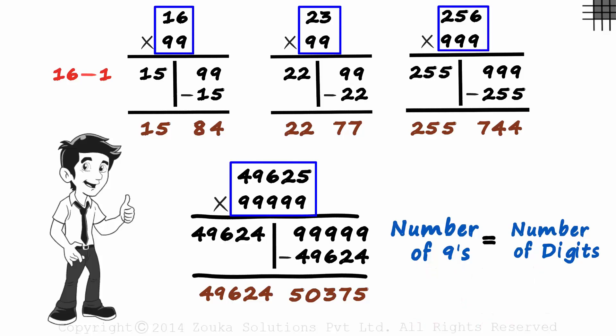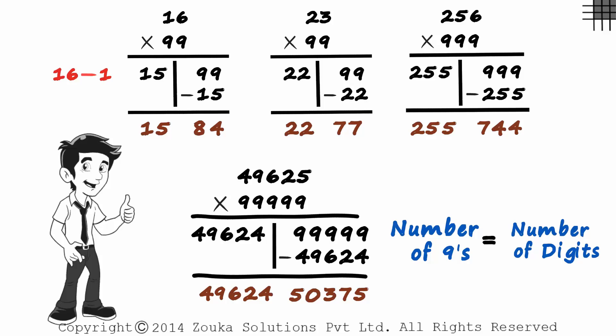But if they are the same, the technique is simple. Subtract one to get a result on the left, and then subtract that result from 99 or 999 or 9,999 and so on. We'll see you soon.